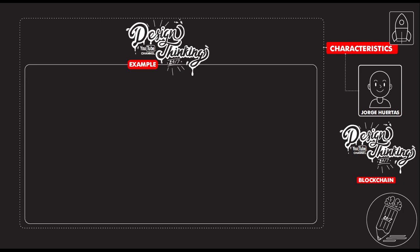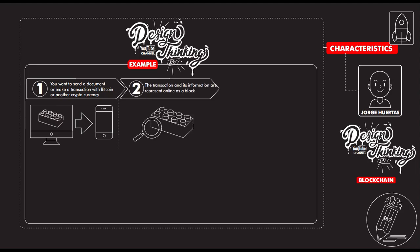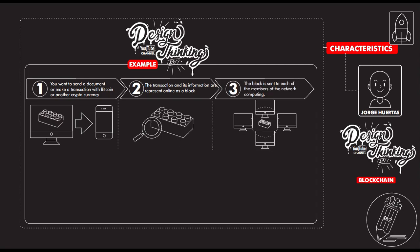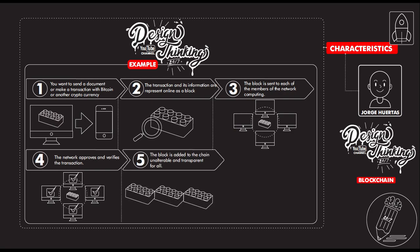Now we are going to see an example. When you want to send a document or make a transaction with Bitcoin or any other currency, the transaction information is represented online as a block. The block is sent to each of the members of the computing network. After that, the network approves and verifies the transaction, and the block is added to the chain.